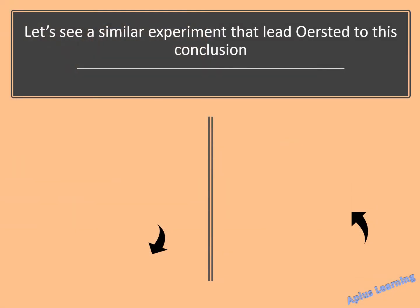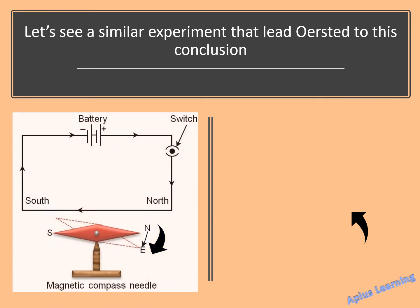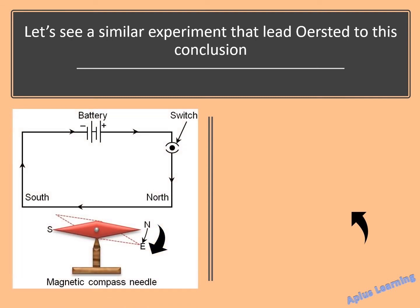Now let's see a similar experiment that led us to this particular conclusion. We have an arrangement in which a circuit is arranged above the pivoted magnetic needle in such a way that the conductor is parallel and very close to the magnetic needle.